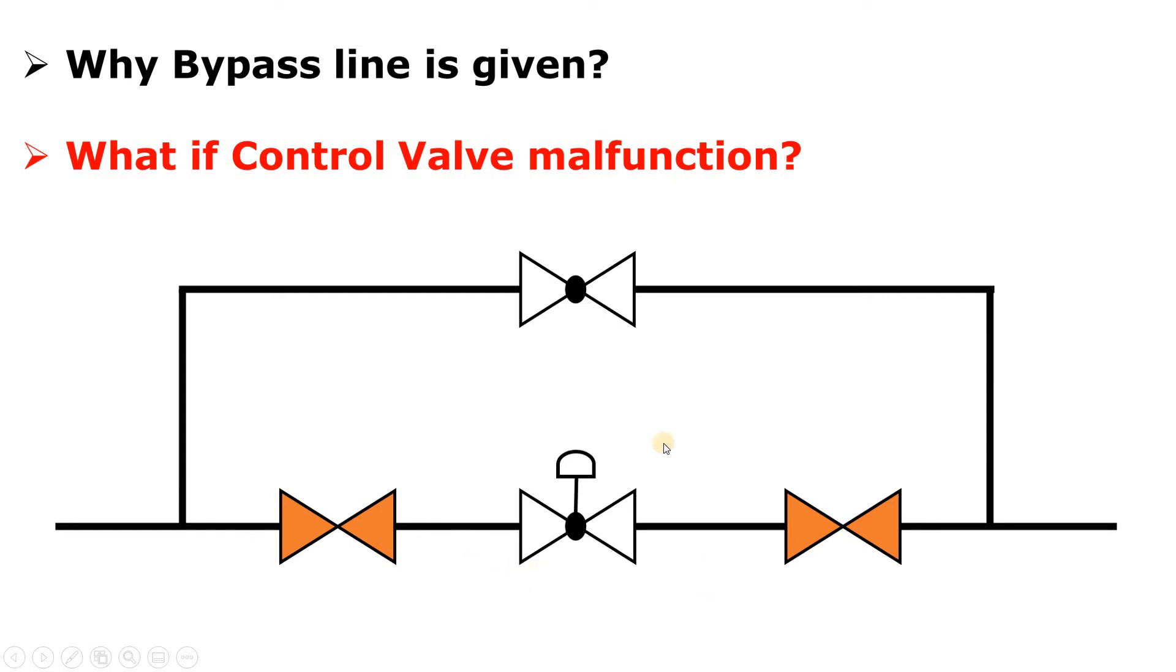Okay, so what will you do? First of all, if it is going under maintenance, you will isolate this control valve. You will close this gate valve and this gate valve. These both gate valves will be closed and you have to also send the solution. So what will you do? You will open this globe valve.